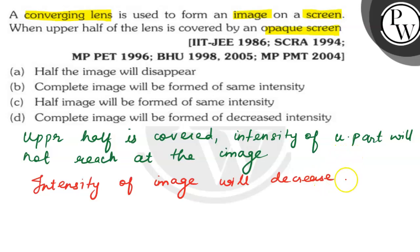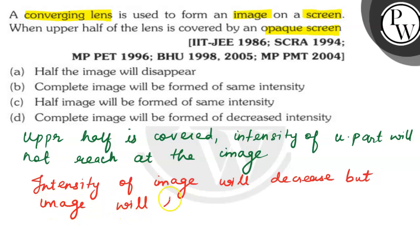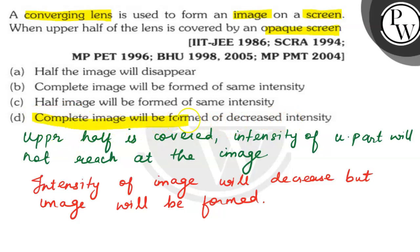But the image will still be formed. So the correct option here is option D: the complete image will be formed but with decreased intensity. This will be correct.